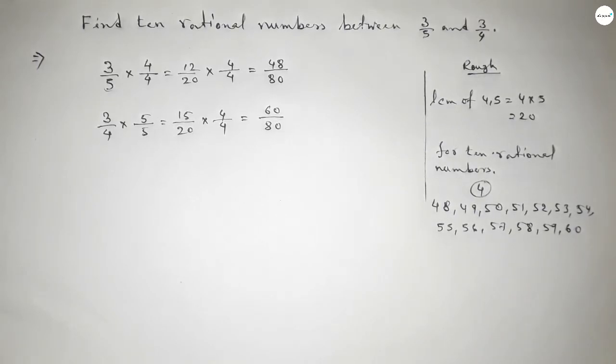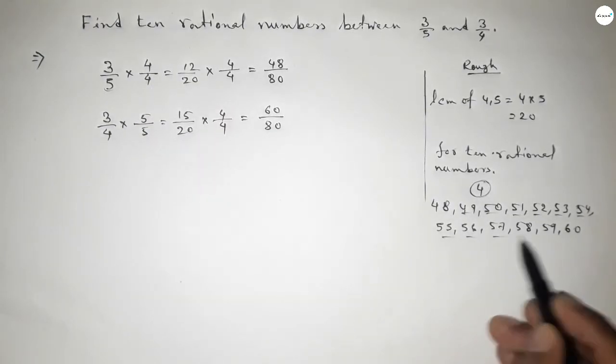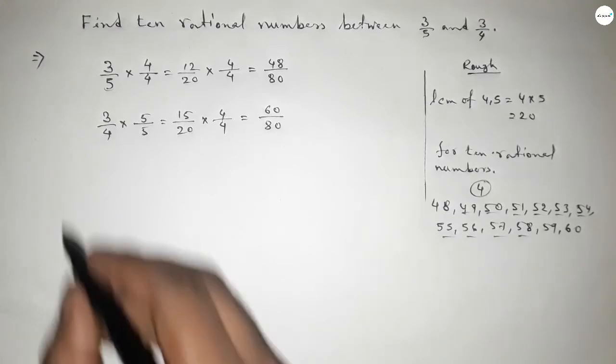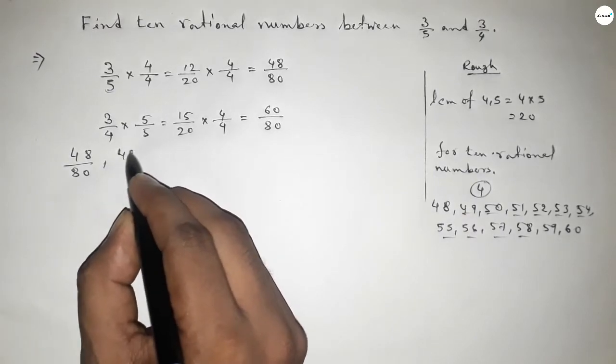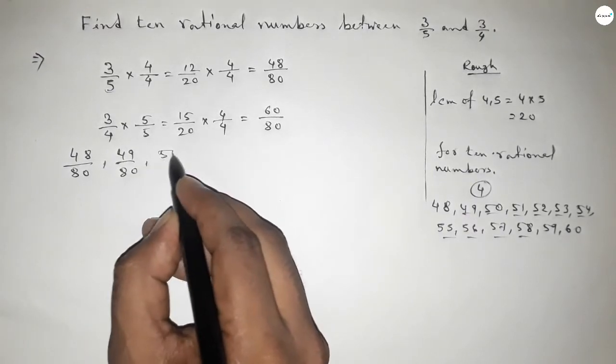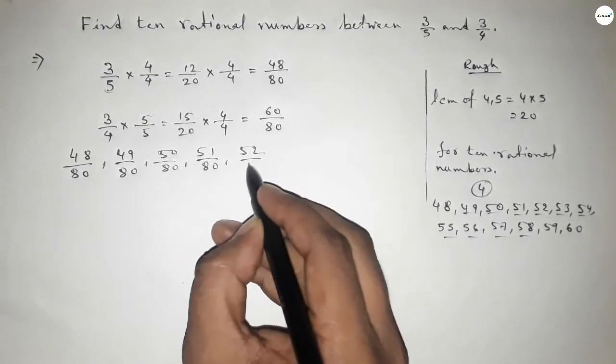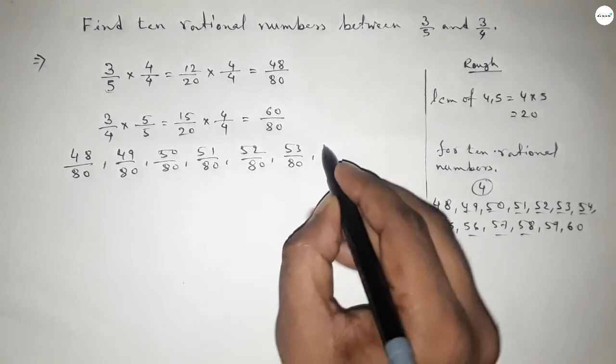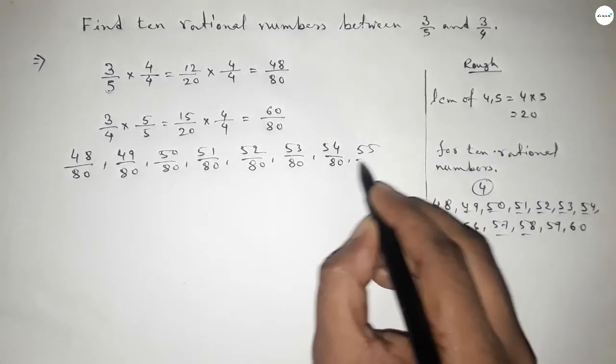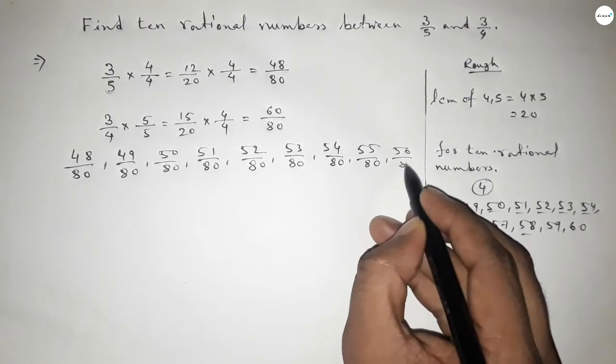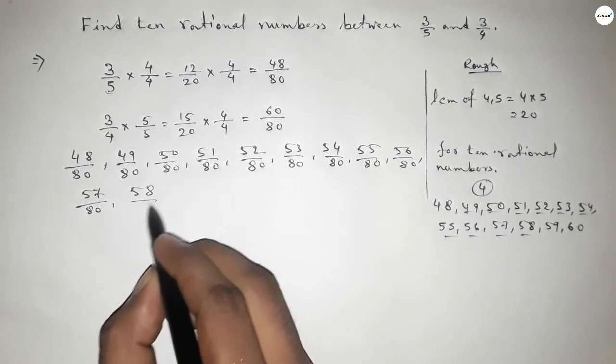So we take only 10 natural numbers. By these natural numbers we can form here all the rational numbers: 48 over 80, 49 over 80, 50 over 80, 51 over 80, 52 over 80, 53 over 80, 54 over 80, 55 over 80, 56 over 80, 57 over 80, and 58 over 80.